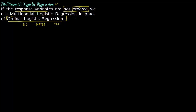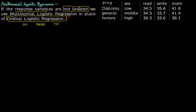For most surveys where the response variable is ordered you will end up using ordinal logistic regression. Now let us give an example for multinomial logistic regression. Say you have data on students. For student 1, his socio-economic status is low, his reading score is 34.5, his writing score is 35.6, his math score is 41.8, and he chooses a diploma.